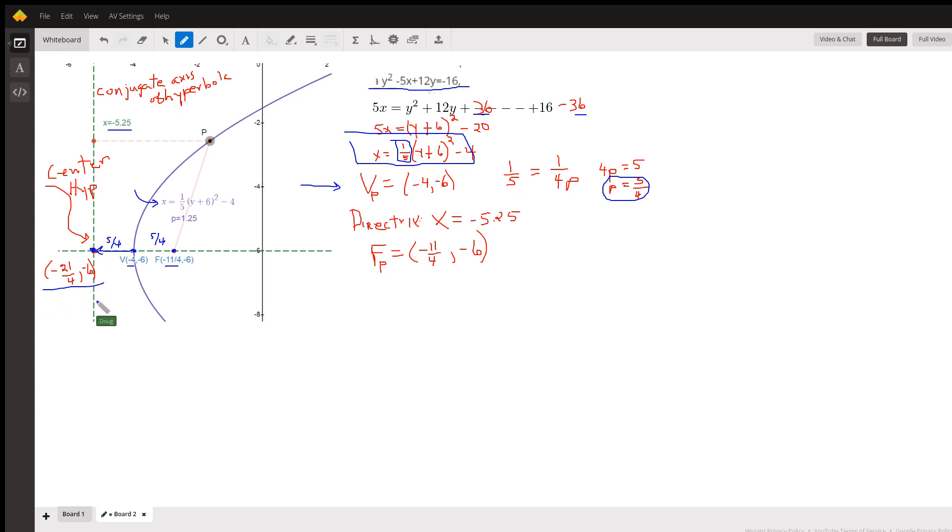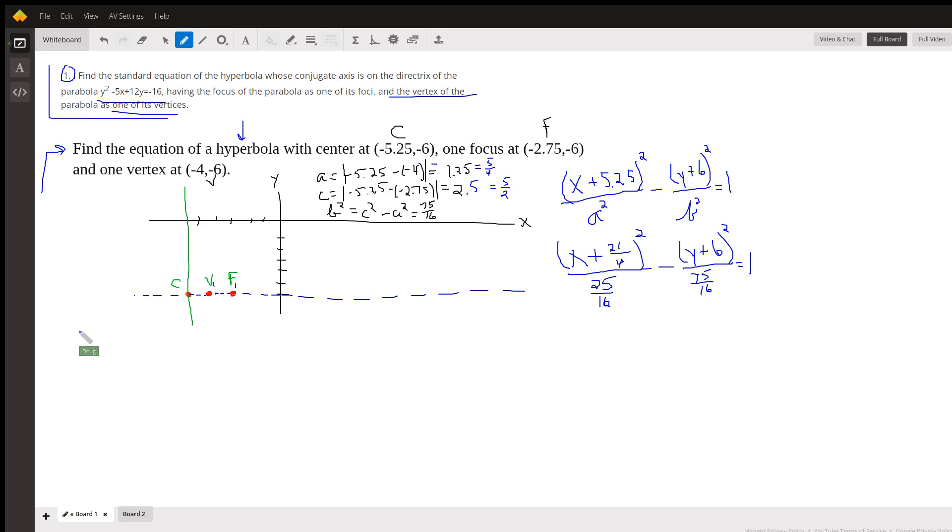So there's the center right there, negative 21 fourths, negative 6. So if I come back here, the coordinates of this point right here are negative 21 fourths, comma, negative 6.